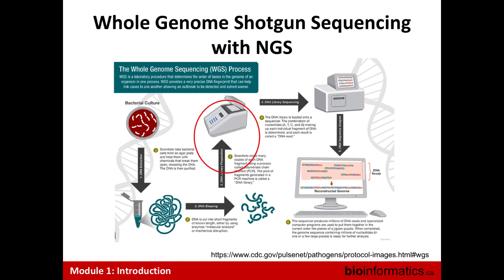In whole genome shotgun sequencing, because there's no cloning stage, the DNA fragments are typically just PCR amplified — sometimes this step is even skipped — before sequencing. This streamlines the process compared to the previous Sanger-based approach, and it's also highly parallelized so you generate a lot of data in a short period of time.